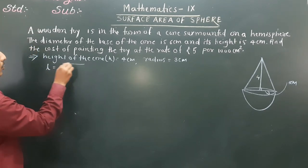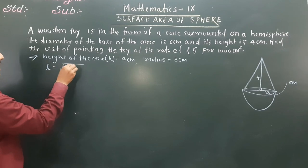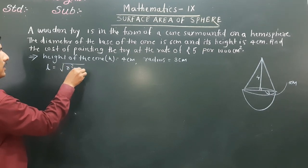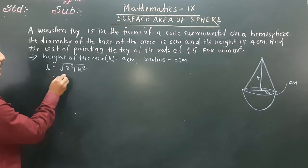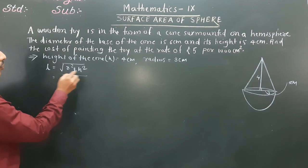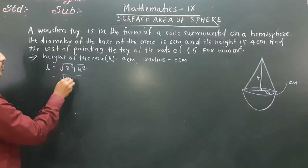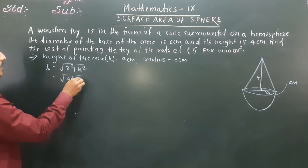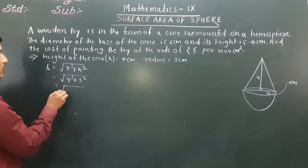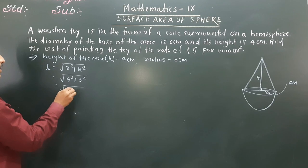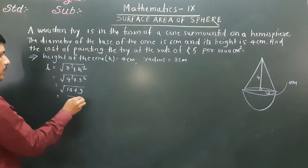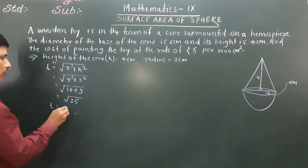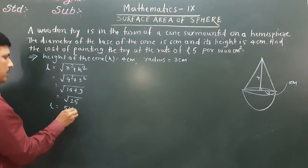L = √(r² + h²). Radius is 3 cm and height is 4 cm, so L = √(4² + 3²) = √(16 + 9) = √25 = 5 cm. So slant height L equals 5 cm.